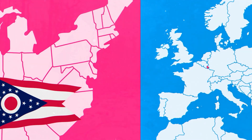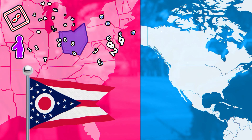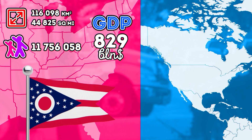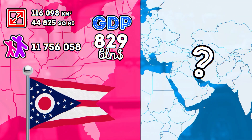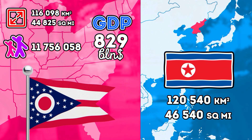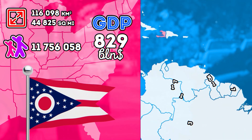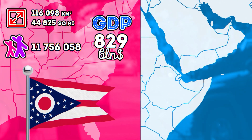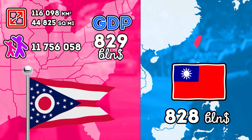Surely many people are wondering what countries are similar to Ohio. Ohio ranks 7th in the United States in terms of GDP and population. Ohio's area is slightly smaller than North Korea. The same number of people live in Haiti – 11.7 million. And in terms of GDP, it's equal to Taiwan and Turkey.